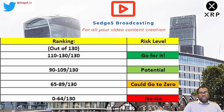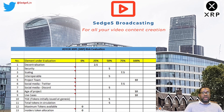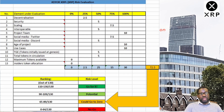Here are the scores allocated to XRP. Decentralization: 2 out of 10. Security: 5 out of 10. Scaling: 7.5 out of 10. Interoperability: 5 out of 10. Project team: 10 out of 10. Social media via Twitter: 7.5 out of 10. Social media via Discord: 5 out of 10. Edge of the project — one of the pioneers of this space: 10 out of 10. Use cases — XRP has use cases in bucket loads: 10 out of 10. Tokens issued at project launch: 5 out of 10. Tokens in circulation at the point of this video: 5 out of 10. Maximum tokens available: 0 out of 10, because it's sitting at 100 billion. Insider token allocation is 99.8%, well above our 30% threshold, so again 0 out of 10. These scores give us a mega total of 72.5 points out of 130, which puts XRP within the could go to zero category.